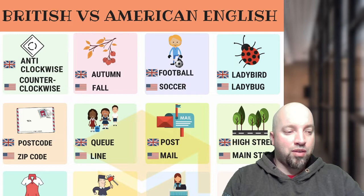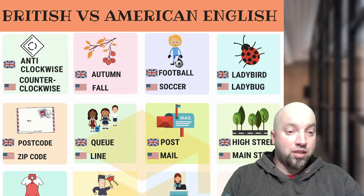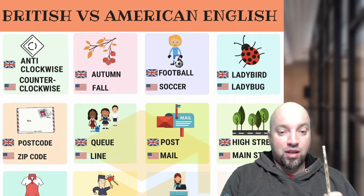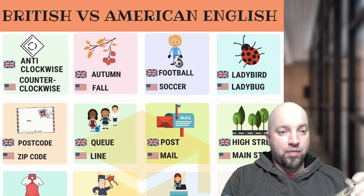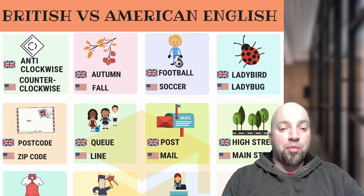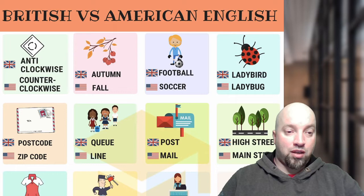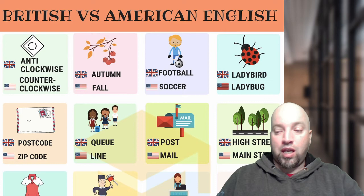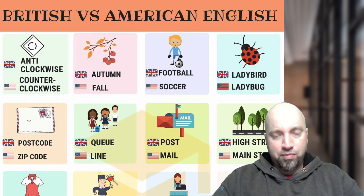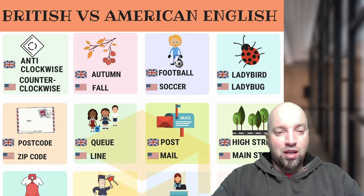'Anti-clockwise' or 'counter-clockwise' — we would say 'counter-clockwise.' Next one: I actually made a video on this one before — 'autumn' and 'fall.' They say 'autumn' in the UK, we would say both, but most likely we would say 'fall' in Canada and the United States. 'Football' and 'soccer' — in Canada and the United States, we actually use 'football' for a different sport where you don't kick the ball very much. For what the British call football, in Canada and the United States we would call it 'soccer.'